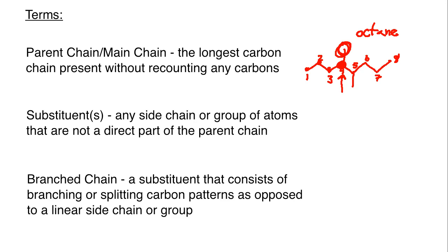These little side groups hanging off the main parent chain are called substituents. A substituent is any side chain or grouping of atoms — because it's not always a chain; sometimes it might be a fluorine, chlorine, bromide, or similar. It's any side chain or group of atoms that are not a direct part of the parent chain. They're coming off of the parent chain but are not counted when determining the parent chain itself — sort of like decorations on the side. They will be included in the name but must be approached separately when we start naming.